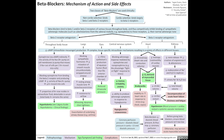Beta blockers bind to beta 1 and/or beta 2 receptors of various tissues throughout the body, and they competitively inhibit the binding of sympathetic adrenergic molecules, such as catecholamines from the adrenal medulla like epinephrine, to these receptors, thus reducing their normal adrenergic tone.